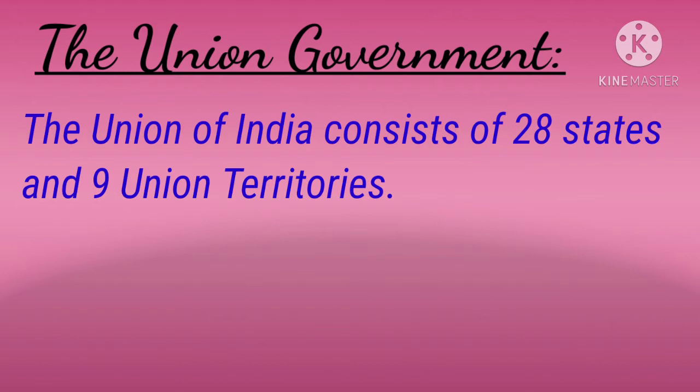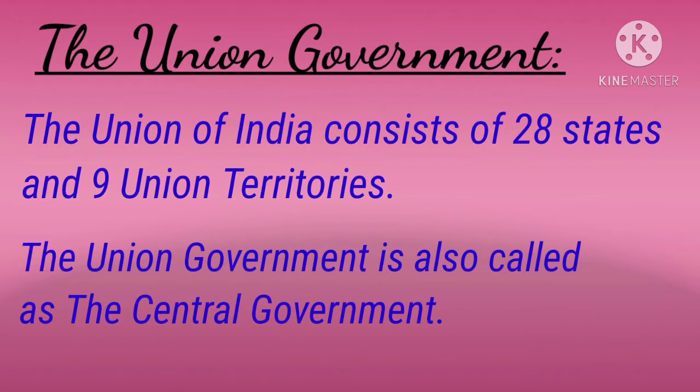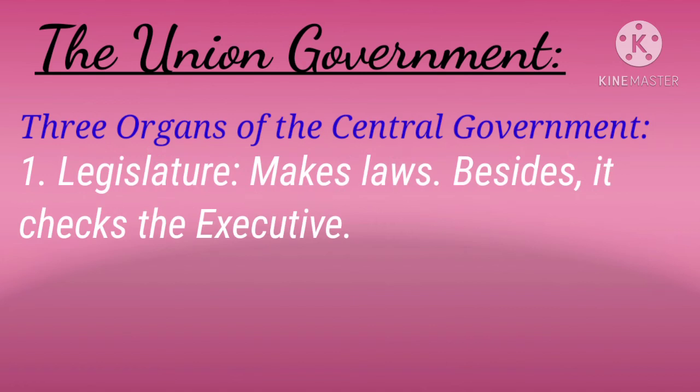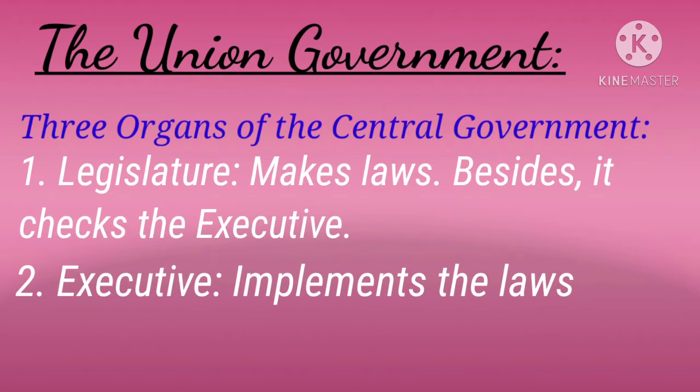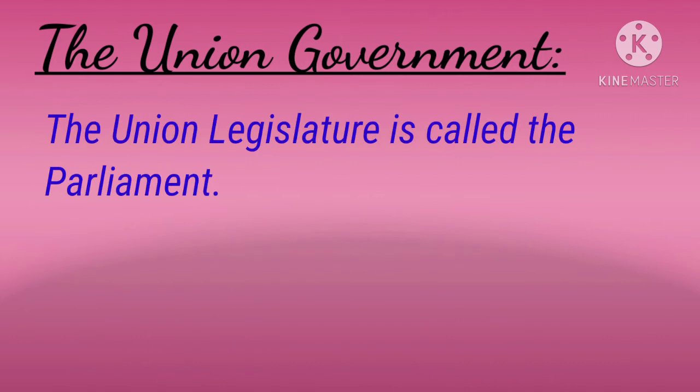The Union Government. The Union of India consists of 28 states and 9 Union territories. The Union Government is also called the Central Government. The three organs of the Central Government are: Legislature, which makes the laws and checks the Executive; the Executive, which implements the laws; and Judiciary, which gives judgment.